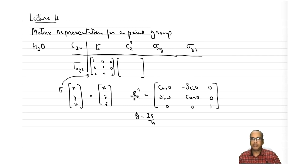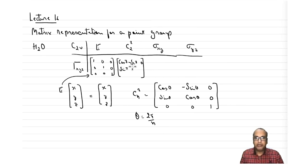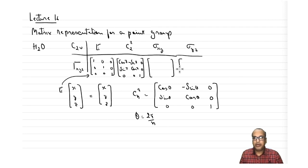Substituting θ = π: cos π, −sin π, 0 / sin π, cos π, 0 / 0, 0, 1. Now let's consider σ(xz) and σ(yz).